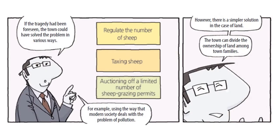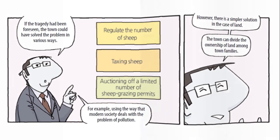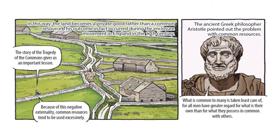If the tragedy had been foreseen, the town could have solved the problem in various ways — for example, using the way that modern society deals with the problem of pollution. However, there is a simpler solution in the case of land: the town can divide the ownership of land among town families. In this way, the land becomes a private good rather than a common resource. This outcome in fact occurred during the enclosure movement in England in the 17th century.